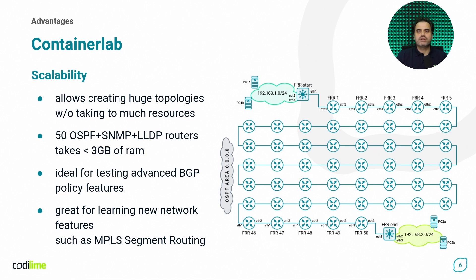Since Container Lab uses Docker, the images themselves are very light. For example, the topology shown on this slide with 15 devices, each running OSPF, SNMP, and LLDP, takes only 3 GB of RAM and can be deployed in under a minute, using an average laptop CPU. As soon as you deploy the topology, you can use SNMP to query each device for OSPF neighbors and LLDP adjacencies — making it ideal for network monitoring software and CI/CD integration. With a large topology at your fingertips, one can start working with advanced features such as BGP advanced routing policy, MPLS segment routing, telemetry, traffic sampling, and more.